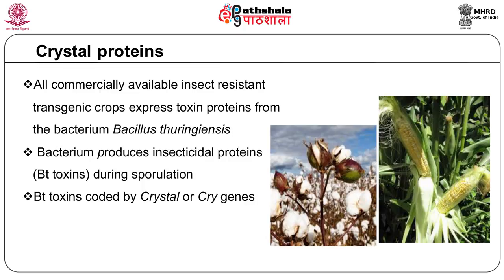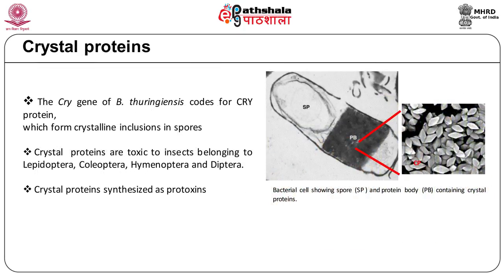The cry gene of Bacillus thuringiensis produces a protein which forms crystalline inclusions in the bacterial spores. Most cry proteins have a distinctive insecticidal spectrum. Some crystal toxins are specific to lepidopteran pests, while others are specific to coleopteran or dipteran pests.